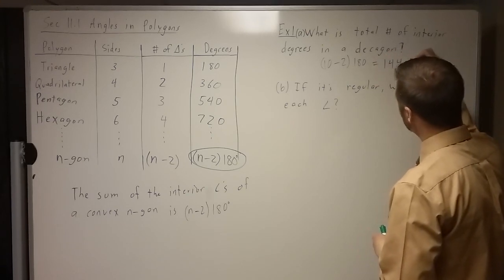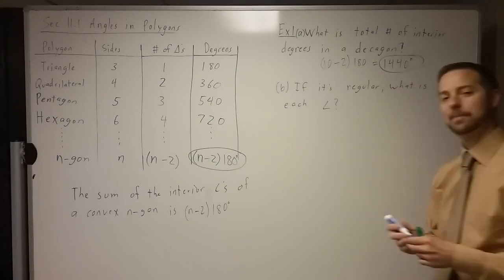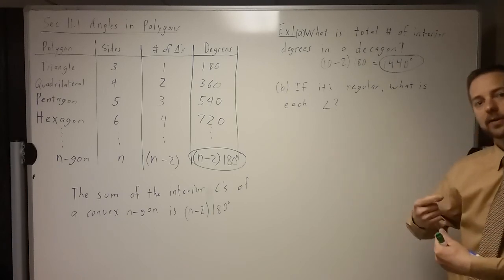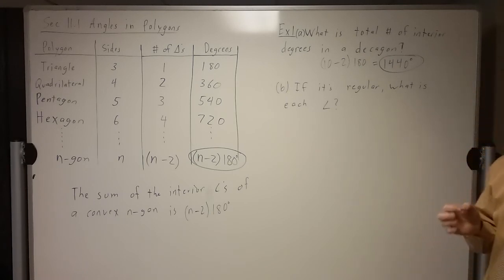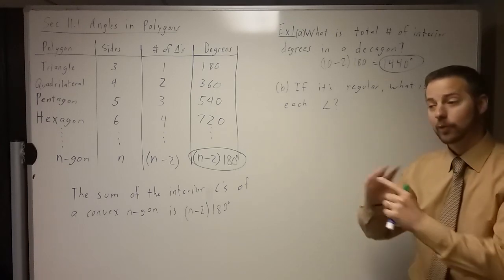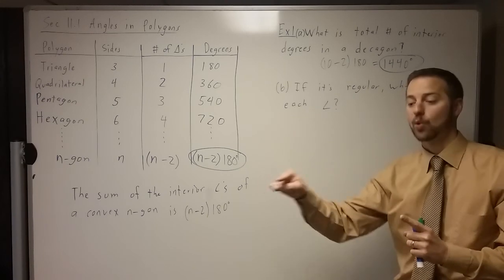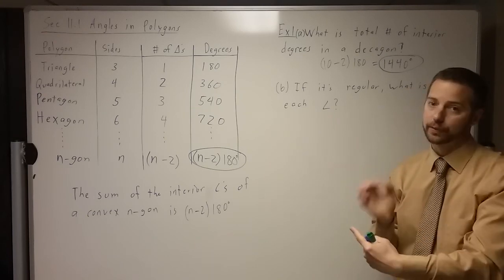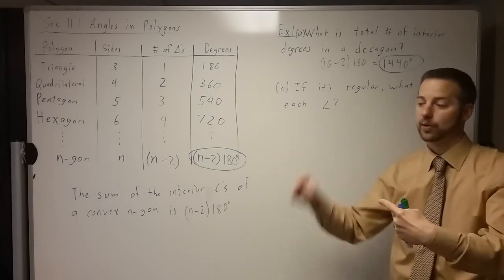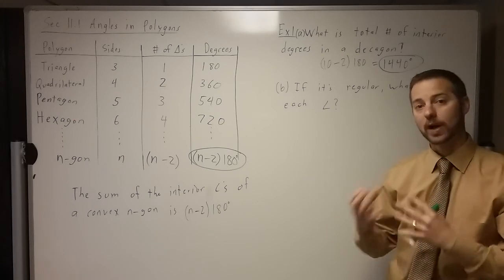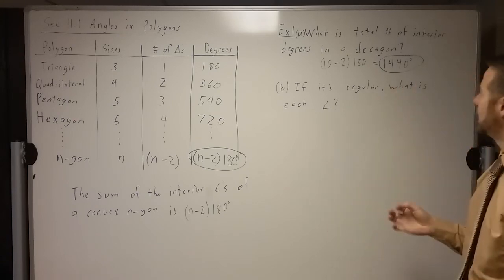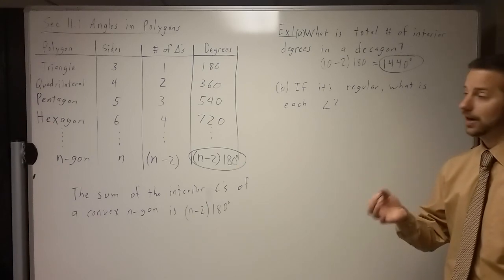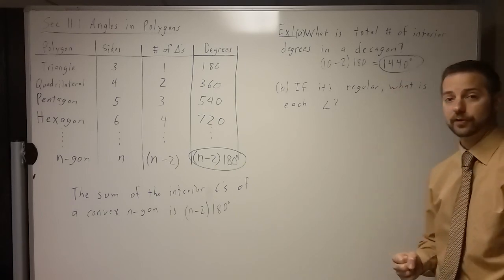A lot of times people are unhappy about this because they say, how can something be more than 360? Isn't 360 all the way around? Yes, that is an excellent point — but we're not going all the way around a single point. If we've got a decagon, we have 10 points that we're going part of the way around. So yes, around a single point there is only 360 degrees, but since we have 10 points here, it's fine that it's much bigger than 360. So the sum of the interior angles in a decagon is 1,440 degrees.